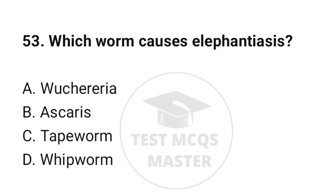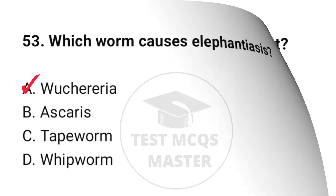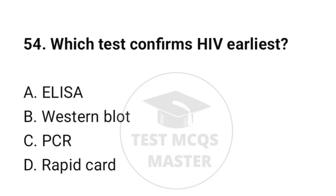Question number 53: Which worm causes elephantiasis? The correct option is C: Wuchereria bancrofti. Question number 54: Which test confirms HIV earliest? The correct option is C: PCR.